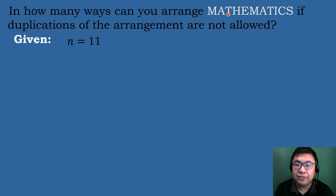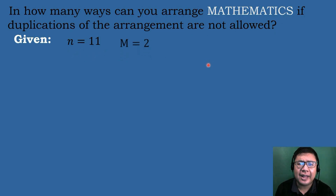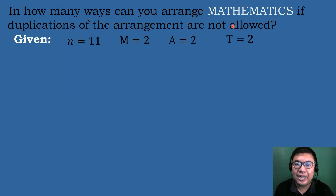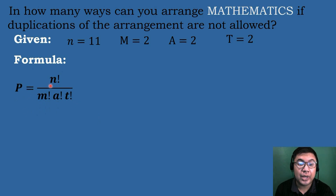There are 11 letters. Next, we identify the duplicated letters. Letter M appears 2 times, so M equals 2. Letter A is repeated 2 times, so A equals 2. Letter T is repeated 2 times, so T equals 2. We use the formula: P equals N factorial over M factorial times A factorial times T factorial.